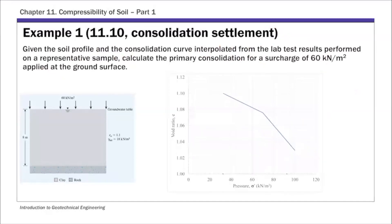In this example, we're going to estimate primary consolidation settlement given this E log sigma prime curve. We have this from our lab test on a representative sample at the middle of the clay layer, which is the consolidating layer.